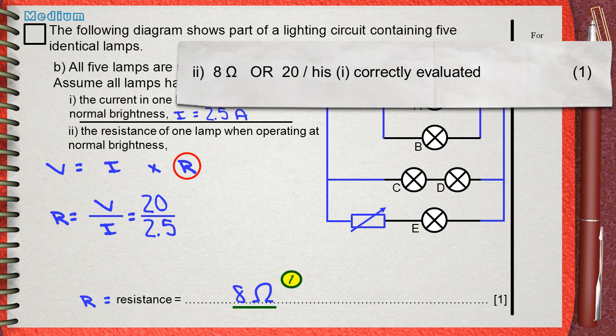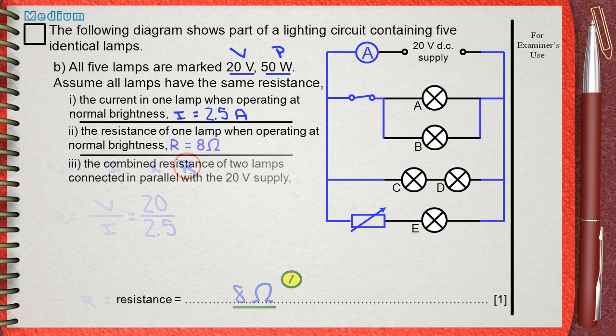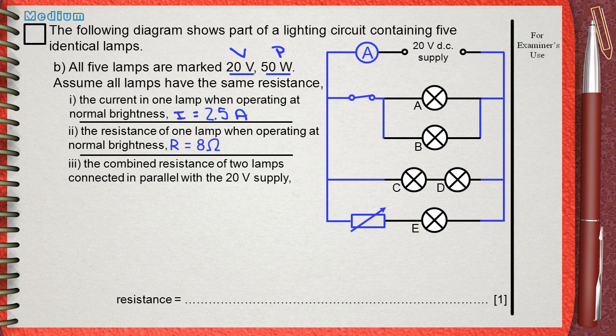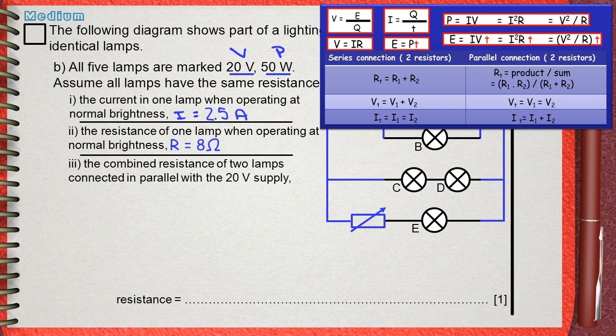We got one mark for 8 Ohms. The third question. The combined resistance of two lamps connected in parallel with the 20V supply. If you look at the 16 rules, you will find the rule of combined resistance of two resistors in parallel. R parallel equals R1 times R2 divided by R1 plus R2. Since all our lamps are identical, this means they all have the same resistance, 8 Ohms.